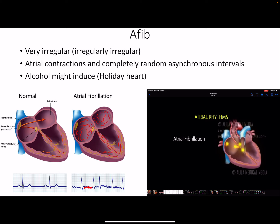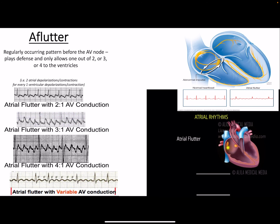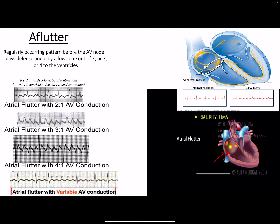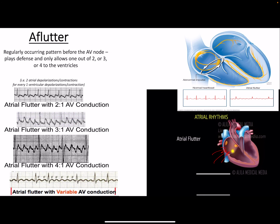Atrial flutter has one dominant re-entry circuit with a rate above the SA node. The circuit loops several times, but the AV node plays defense — it only passes some signals through. You could have an atrial rate of 300 bpm with a ventricular rate of 150 bpm — a 2:1 AV conduction ratio — or 300 atrial with 100 ventricular, giving three P waves for every QRS, a 3:1 ratio.